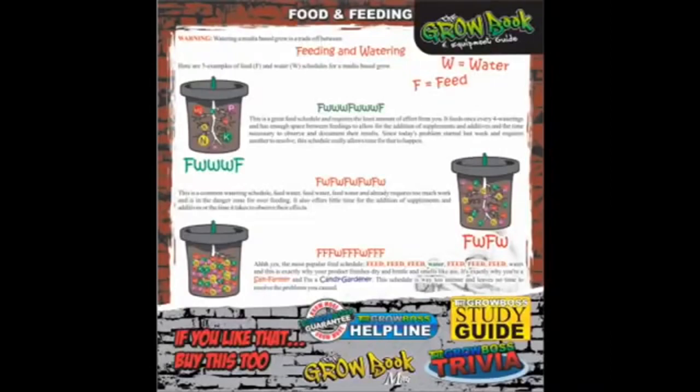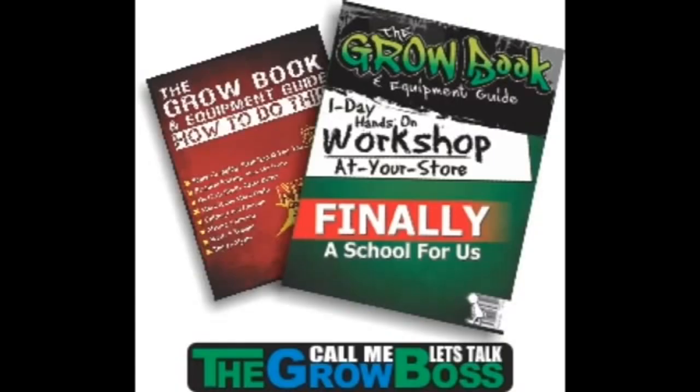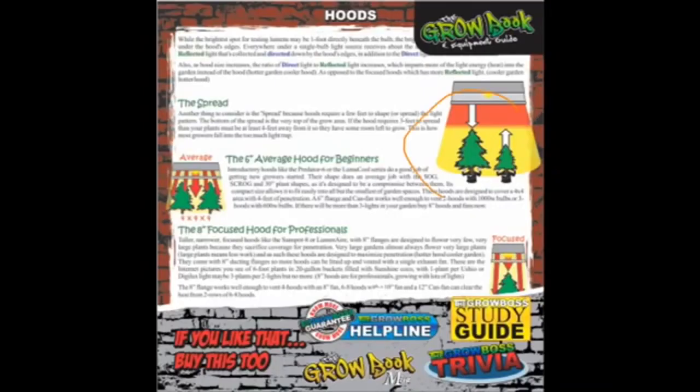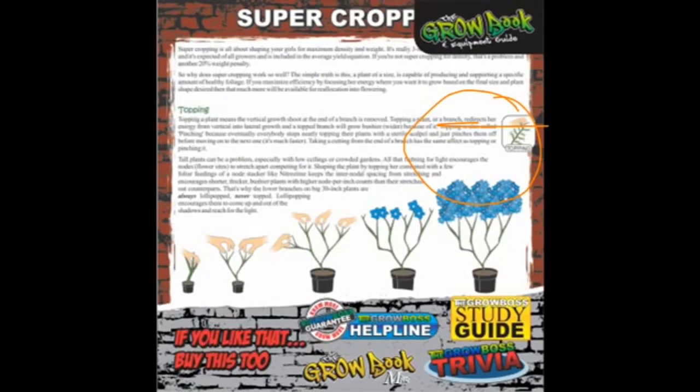Every grower has the same questions you have. Every grower has the same problems you have. That's why I wrote the Grow Book and Equipment Guide. It's everything you need to know to grow. Trust me, you got a question about lighting? Let's talk about that. Check that out. How far away the plant should be from the light. You have a question about topping and super cropping? That's fine too. Let's talk about topping and super cropping. Look at that. I'm the grow boss. Everything you need to know to grow guaranteed. Watch my videos, buy my books, always shop local.